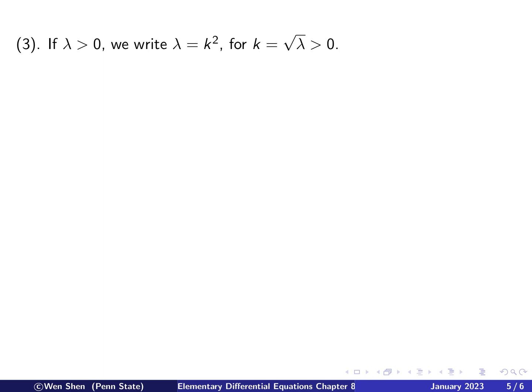So let's hope the last case will be more interesting, non-trivial. So the last case is when lambda is bigger than 0. So let's write lambda = k², where k is square root of lambda, which is assumed to be positive. Then the characteristic equation becomes r² = -k². And then we see we have two imaginary roots. r₁, r₂ will be ±ik, and then the solution will be sine and cosine. So cos(kx) and sin(kx), and a linear combination of them. So c₁ times cosine plus c₂ times sine function.